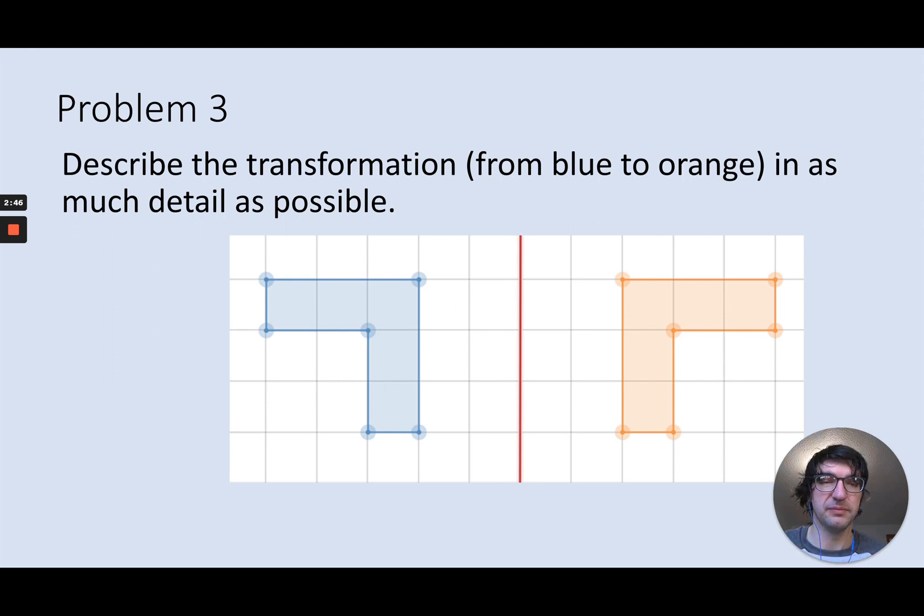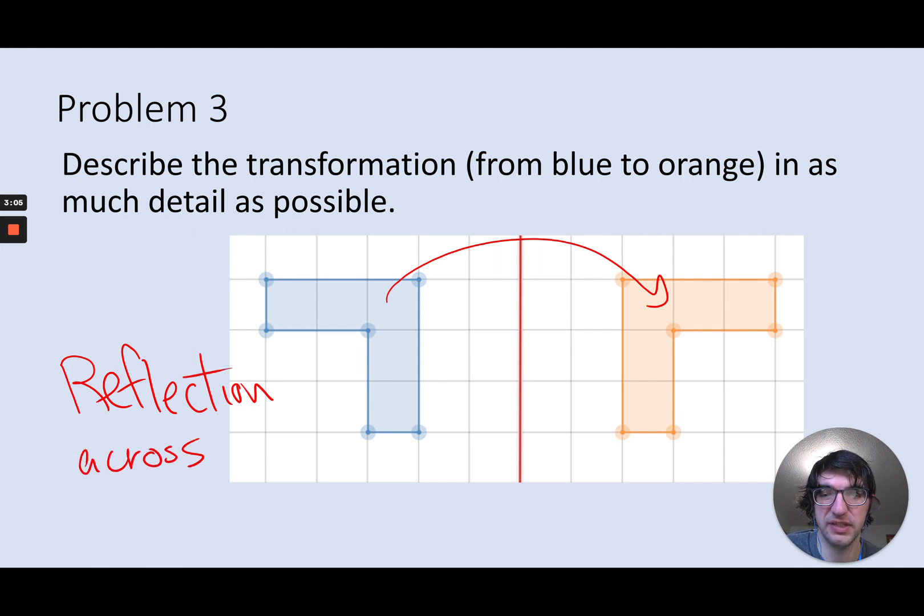Okay, can you try this one? So ponder it, think to yourself, whatever you need. What kind of transformation from blue to orange is going on here? Looks like just a mirror image, which is what we call a reflection, and I want to be very clear—say reflecting across this red line in the middle.